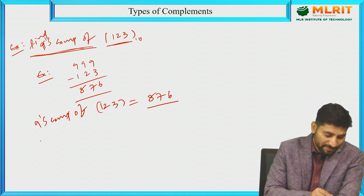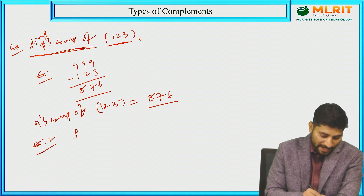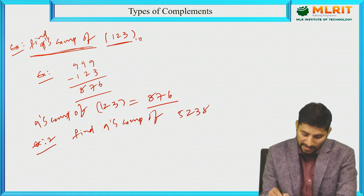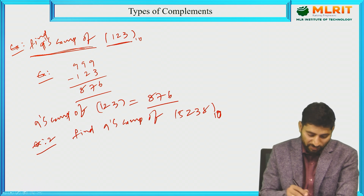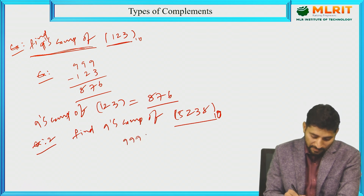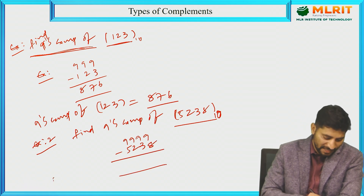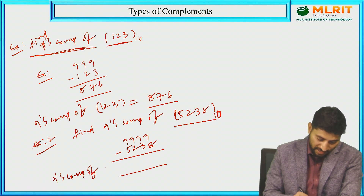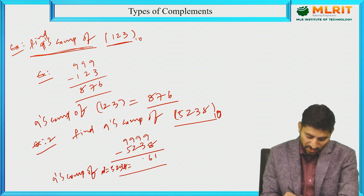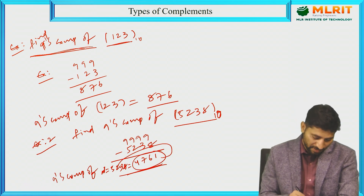One more example: find the 9's complement of 5238. There are 4 digits, so we take four 9's and subtract 5238. We get: 9 minus 8 is 1, 9 minus 3 is 6, 9 minus 2 is 7, 9 minus 5 is 4. So the 9's complement of 5238 is 4761.